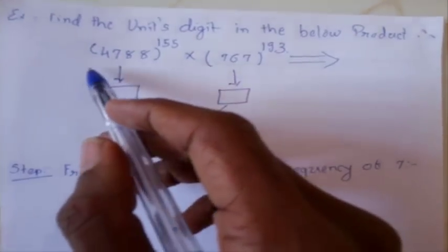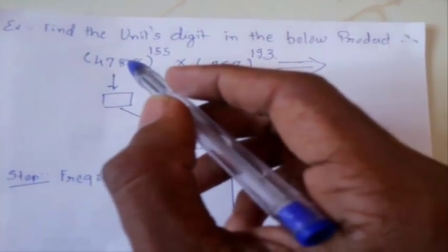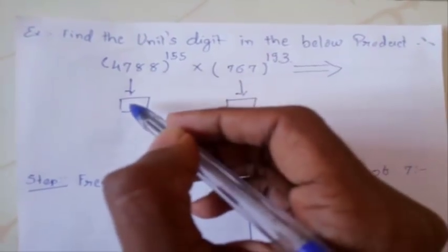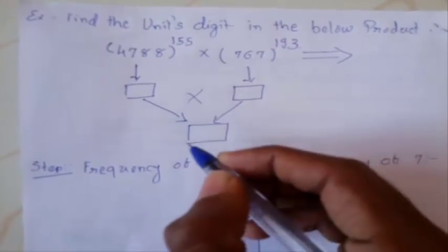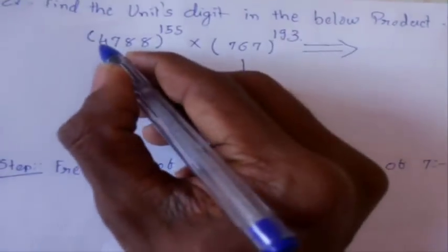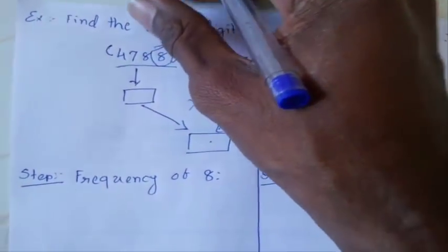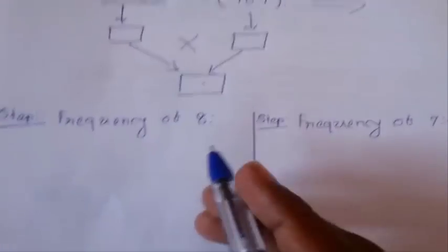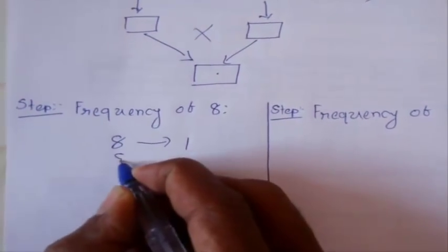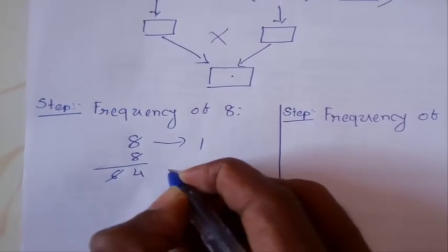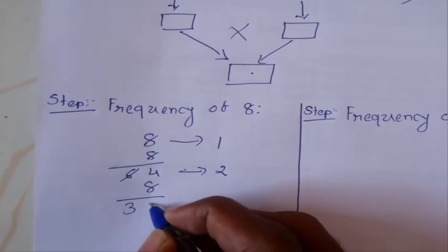Now let's take another more difficult example. We will see how to find out the units digit for a complicated multiplication. We will first find out the units digit for each exponential form and then multiply them together to get the final answer. The units digit of the base here is 8, so we need to find out the frequency of 8. The process is the same as before: put down 8, give rank 1. 8 × 8 = 64 — eliminate 6, give rank 2.